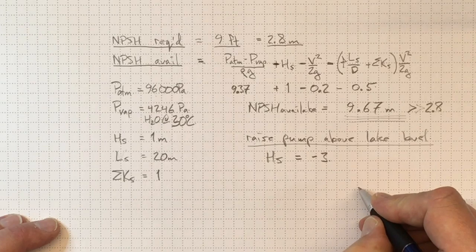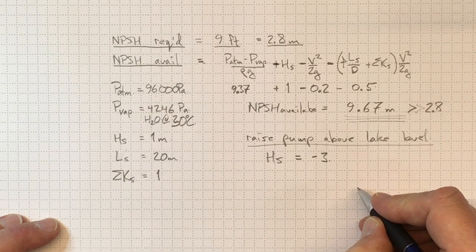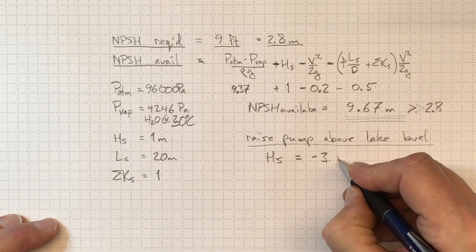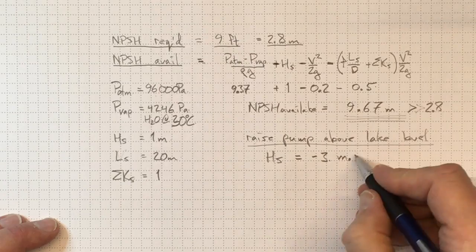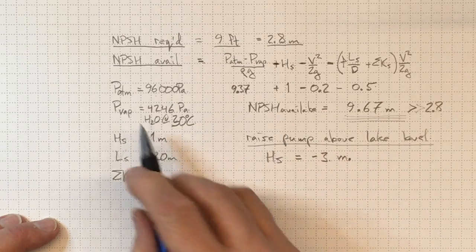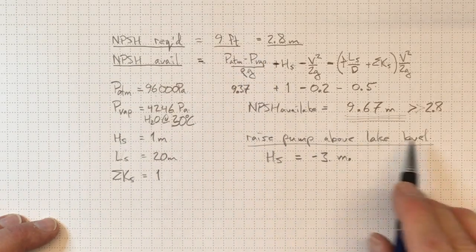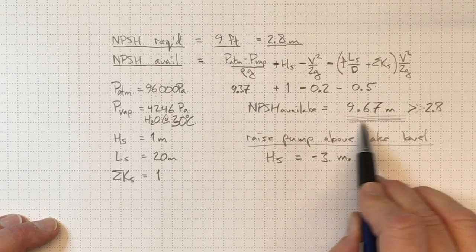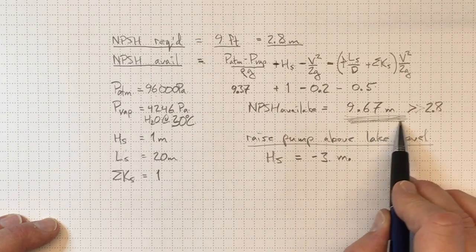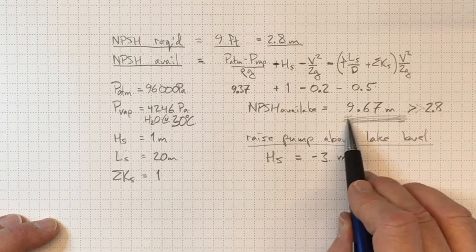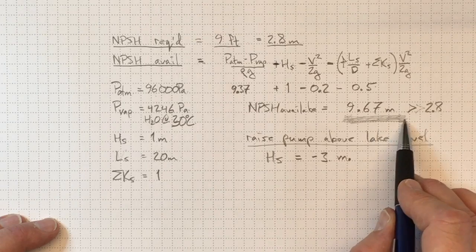We could be 3 meters above lake level, well up onto the shore. And that would be good from a practical design standpoint. So doing this NPSH calculation allows us to find out just how much space we have left in order to enable us to avoid cavitation.